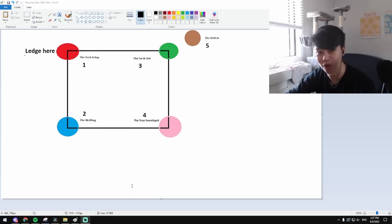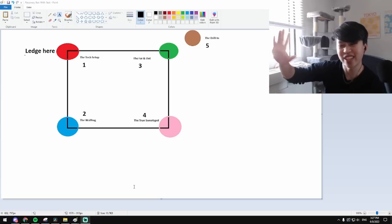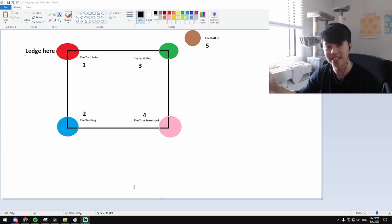That goes into number four, the true sweet spot. Again, I've talked about this a ton, and this is essentially what I've built my entire career off of, is going for the absolute lowest and furthest away from the ledge. And you're going to find that when you think about this recovery with all of the conventional onstage edgeguards, the true sweet spot is going to be the one to dodge almost every single one.